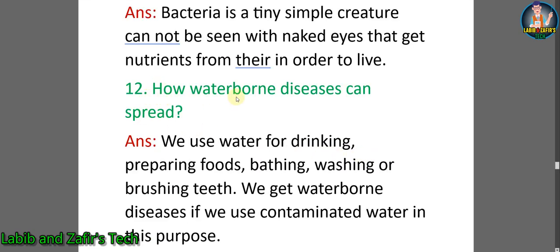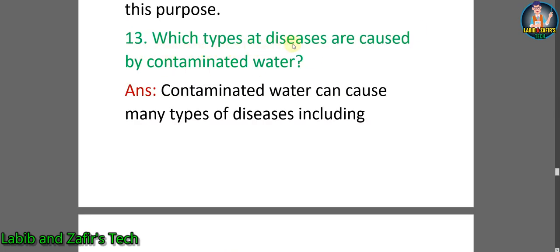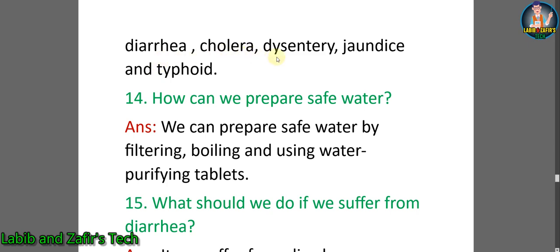Number twelve: how do waterborne diseases spread? Answer: we use water for drinking, preparing foods, bathing, washing, or brushing teeth. We get waterborne diseases if we use contaminated water for these purposes. Number thirteen: which types of diseases are caused by contaminated water? Answer: contaminated water can cause many types of diseases including diarrhea, cholera, dysentery, jaundice, and typhoid.